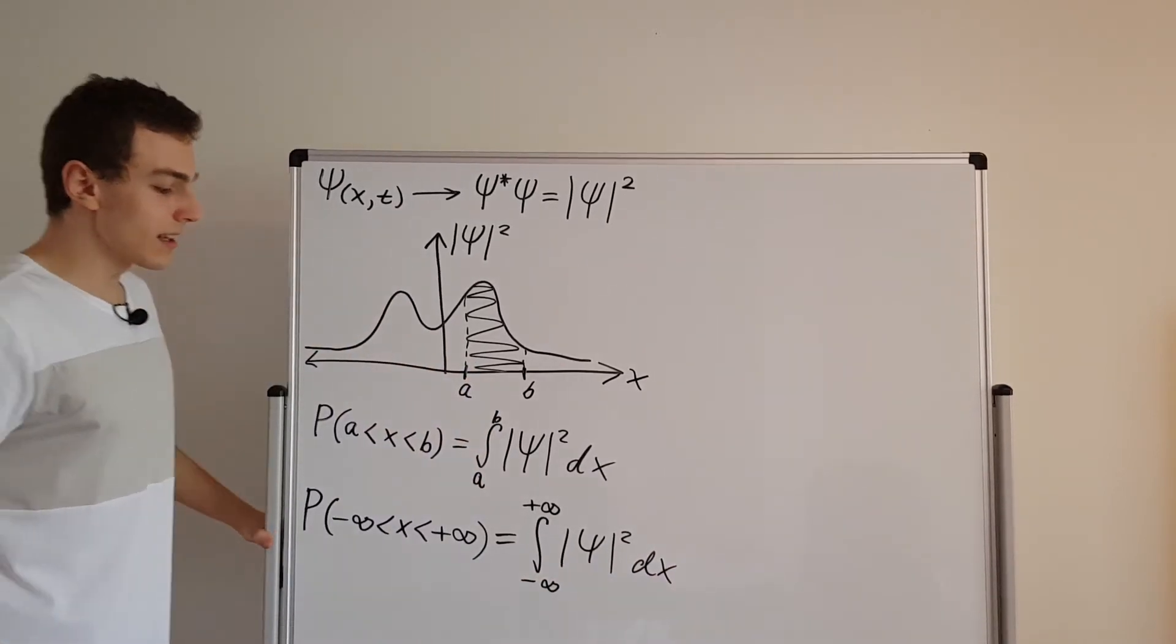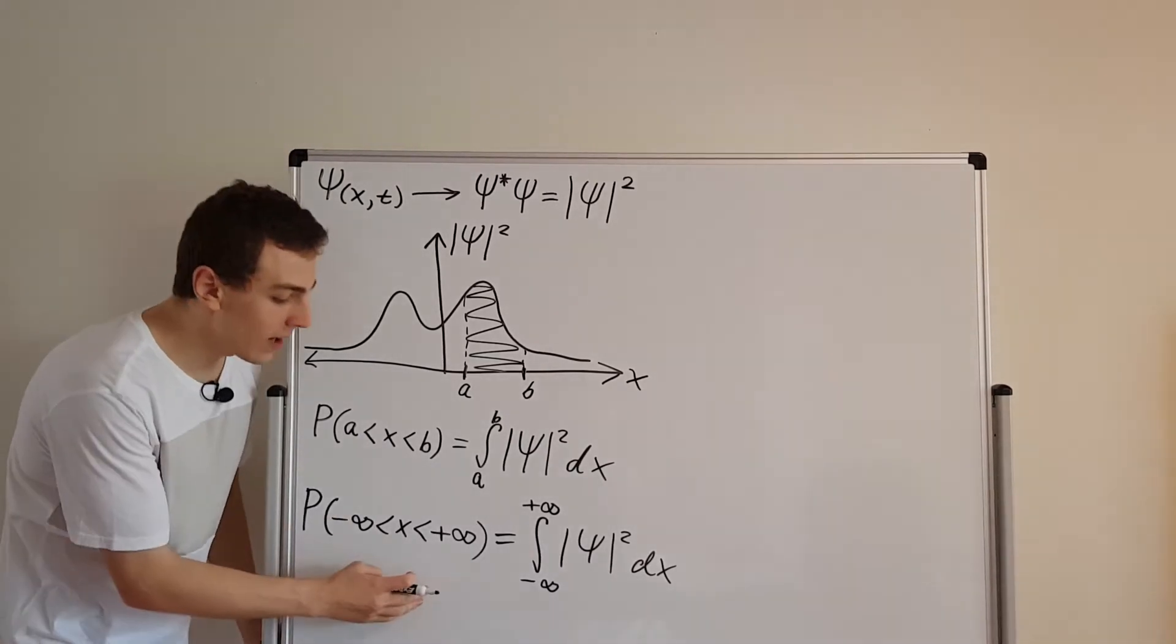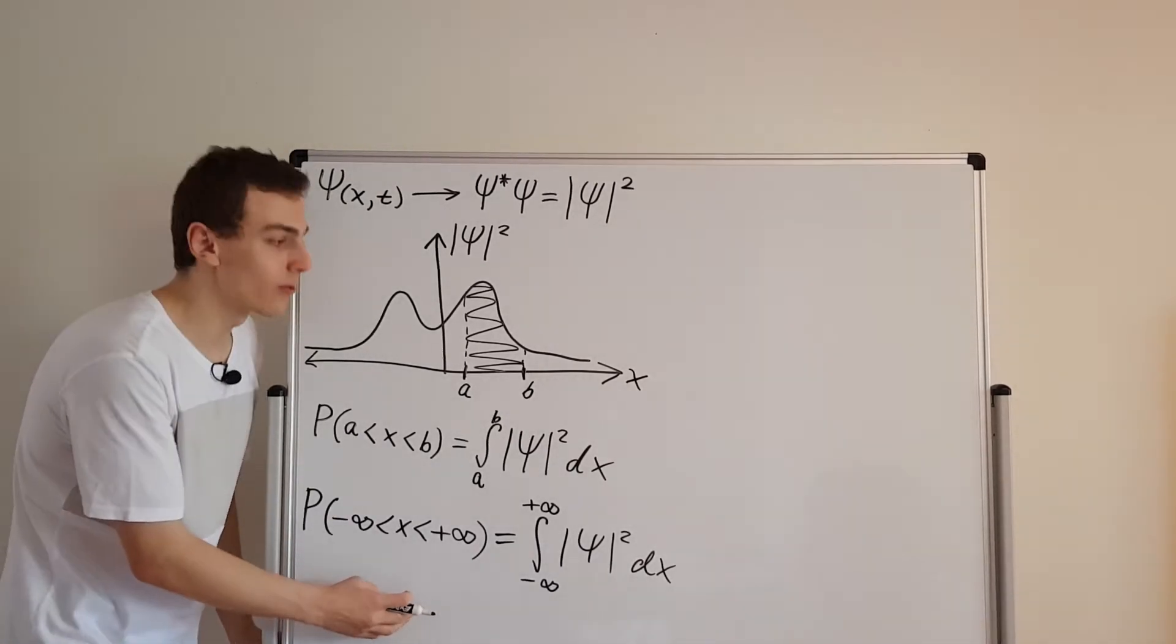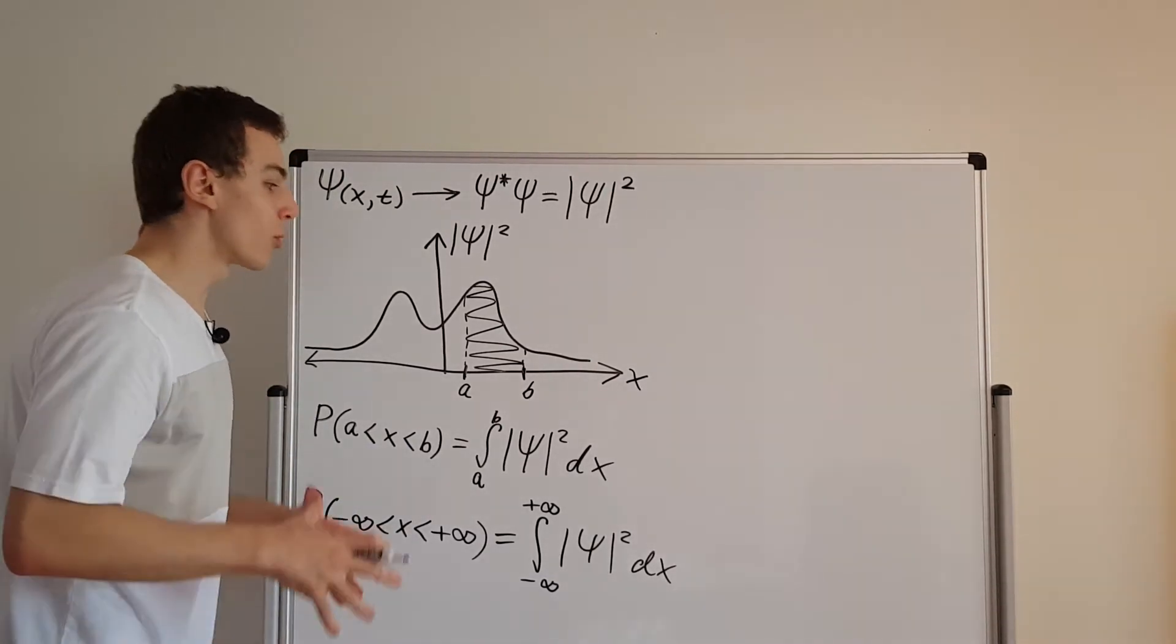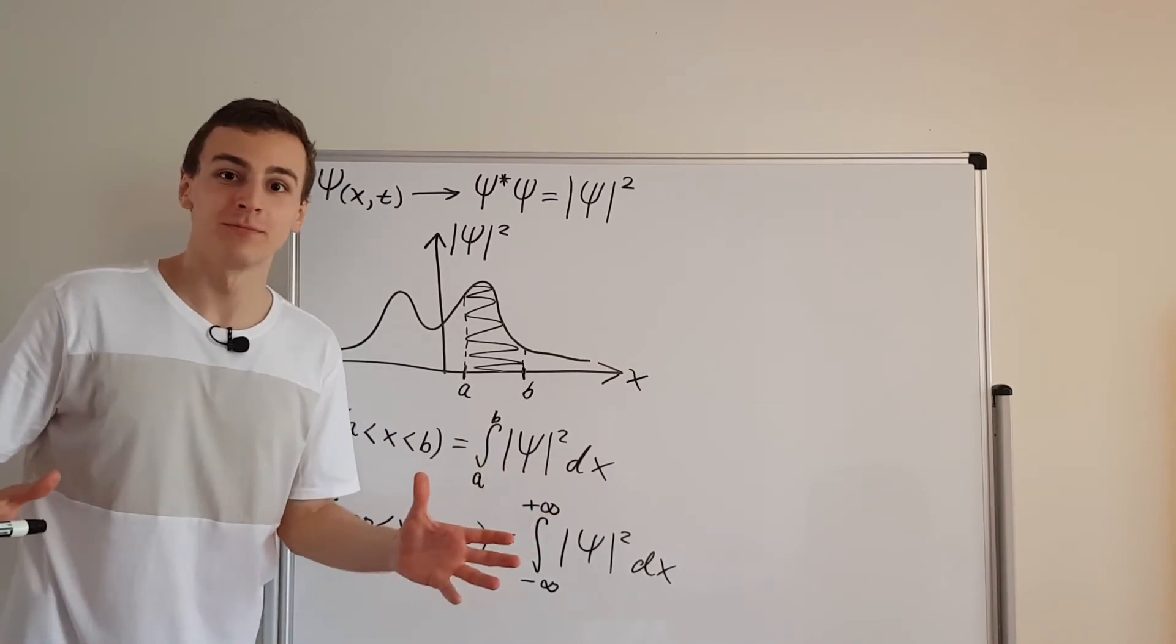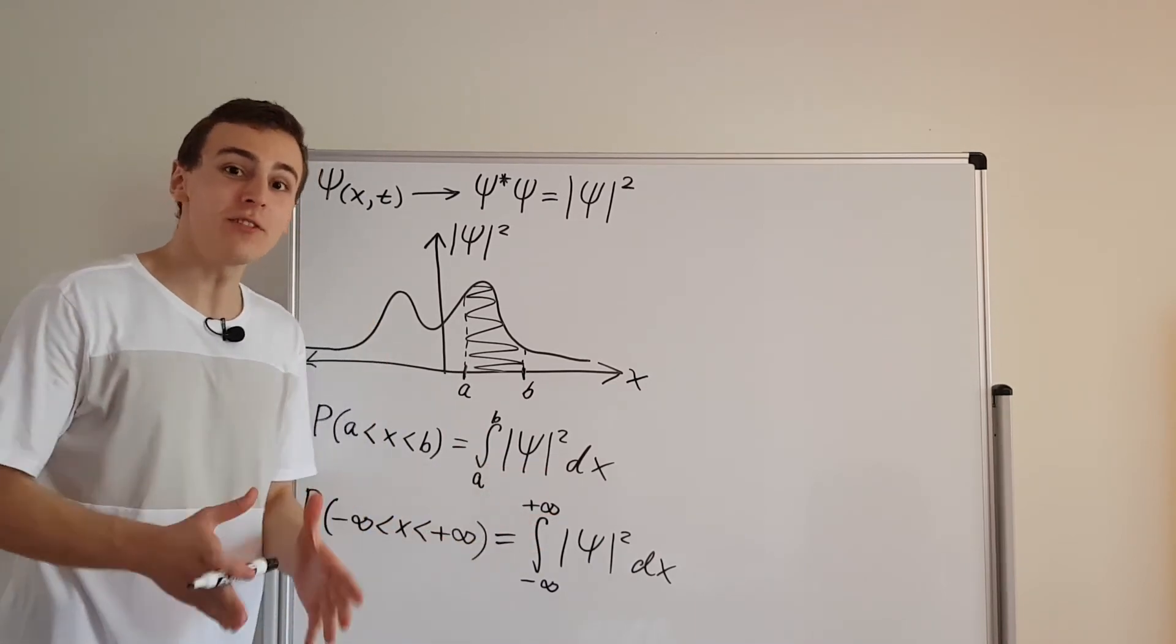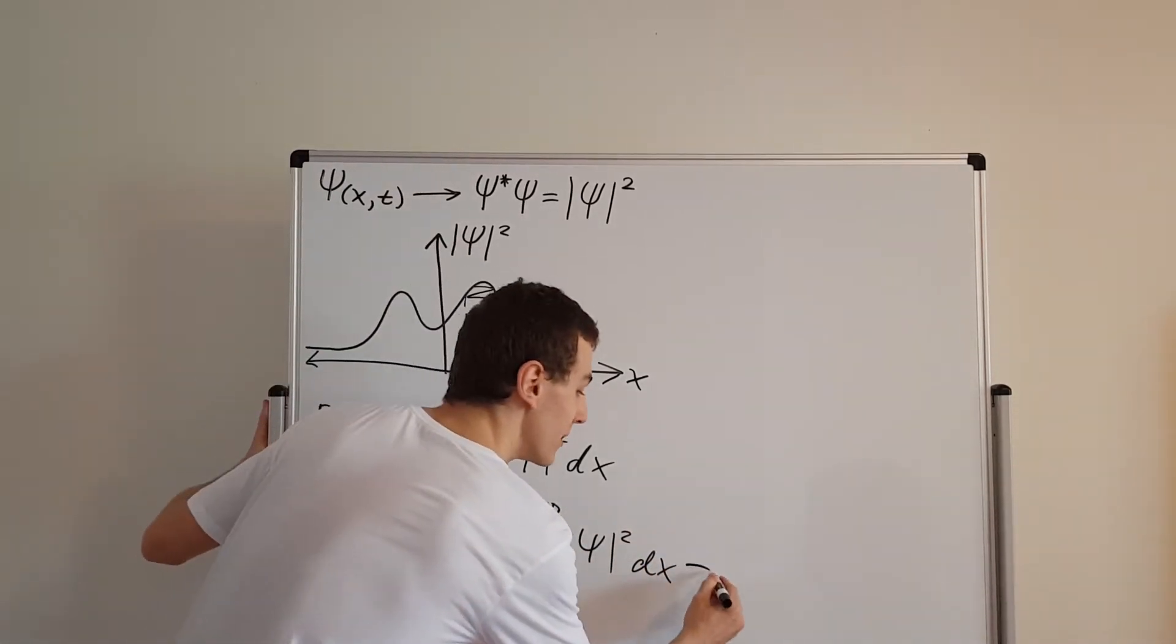Now let's do a reasonability check, a little gut check to see what value this needs to be for this to be considered a probability. What is the probability of measuring an outcome? Any outcome. Well, it has to be one because you're definitely going to get an outcome from your measurement.